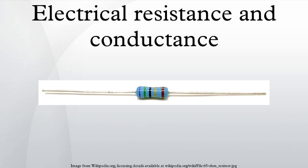Static resistance determines the power dissipation in an electrical component. Points on the IV curve located in the second or fourth quadrants, for which the slope of the chord line is negative, have negative static resistance. Passive devices, which have no source of energy, cannot have negative static resistance. However, active devices such as transistors or op-amps can synthesize negative static resistance with feedback, and it is used in some circuits such as gyrators.